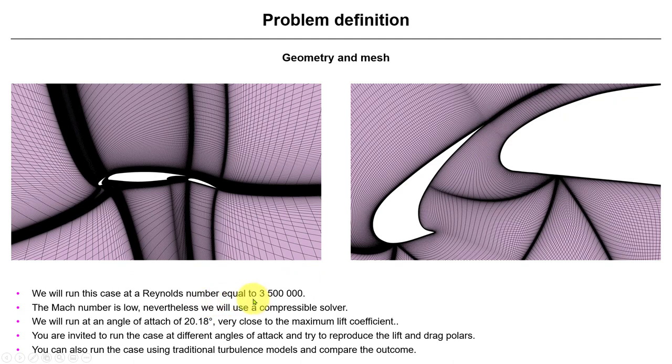This case will run at a Reynolds number of 3.5 million. The Mach number is low, so we'll take it as incompressible. Nevertheless, we're going to use the compressible solver. The Mach number is 0.2, and the particular case we're going to run is very close to the maximum lift coefficient.